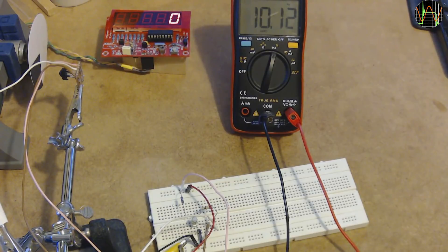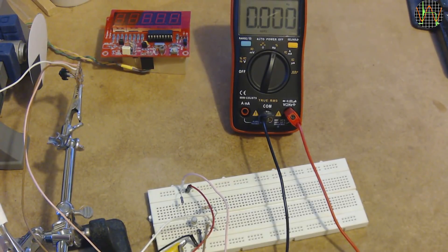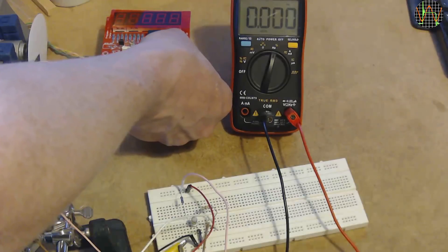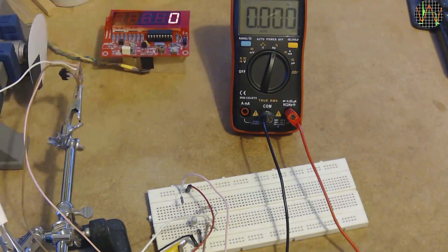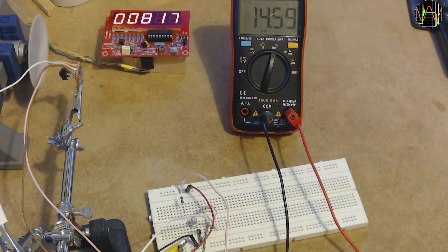The counter remembers if it is in RPM or Frequency mode. If you want to change, simply hold the button during power up and it toggles the setting. Now we are reading RPM instead of Frequency.